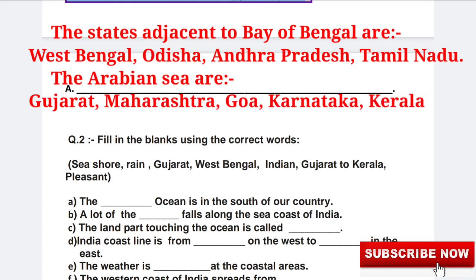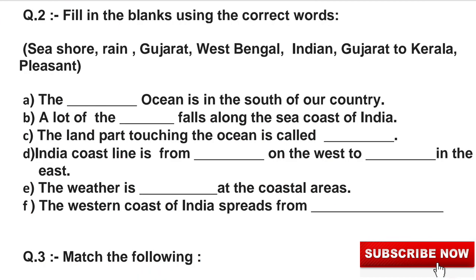And the states adjacent to the Arabian Sea are: 1. Gujarat, 2. Maharashtra, 3. Goa, 4. Karnataka, 5. Kerala. Question 2: Fill in the blanks using the correct words.